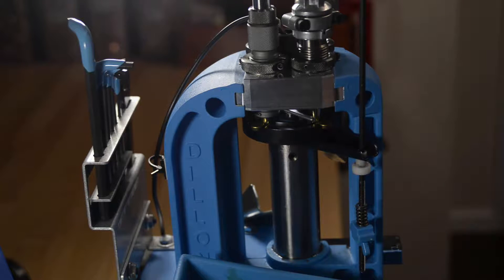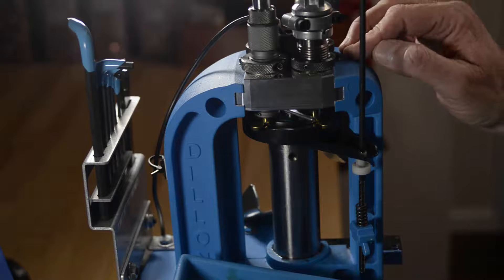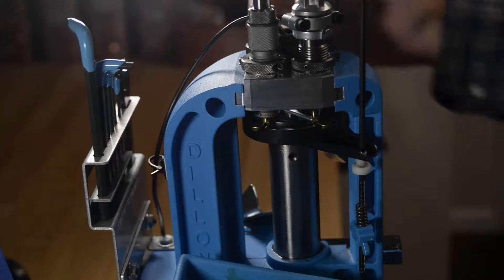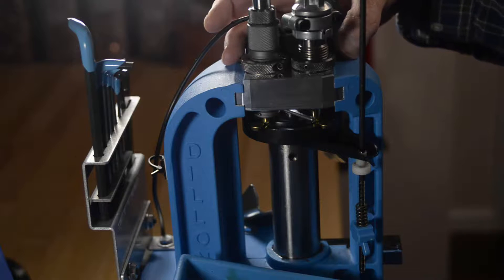Then you use your hex key and tighten the two screws in an alternating fashion. Tighten this one a little, then this one, and then this one, and this one, until they're both hand tight. They don't need to be tighter than hand tight.